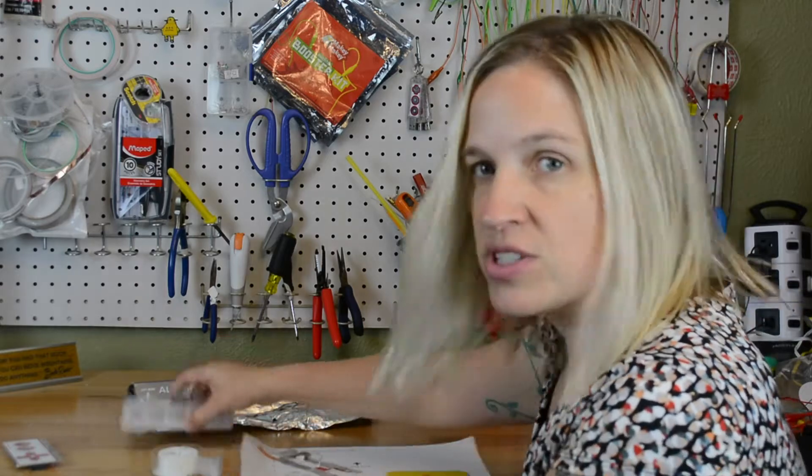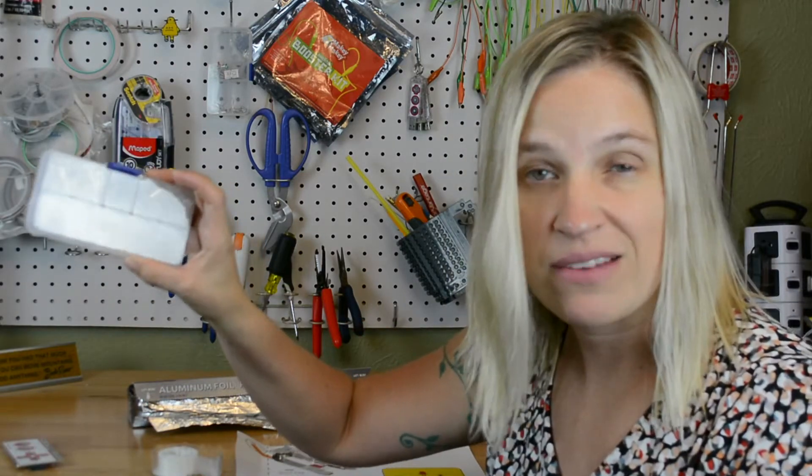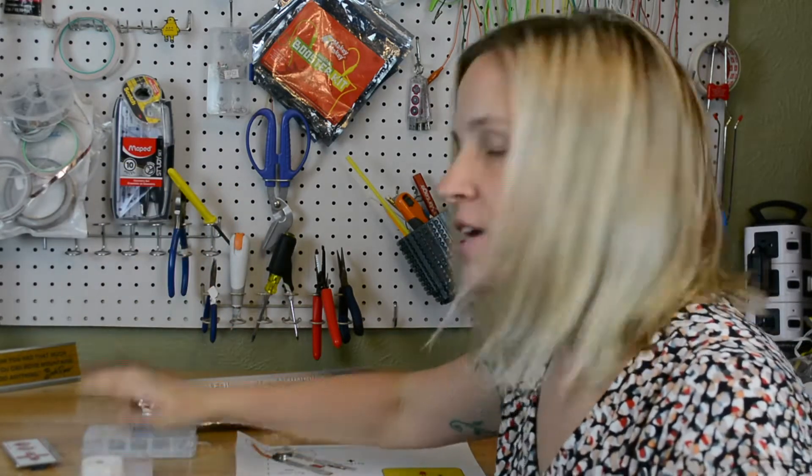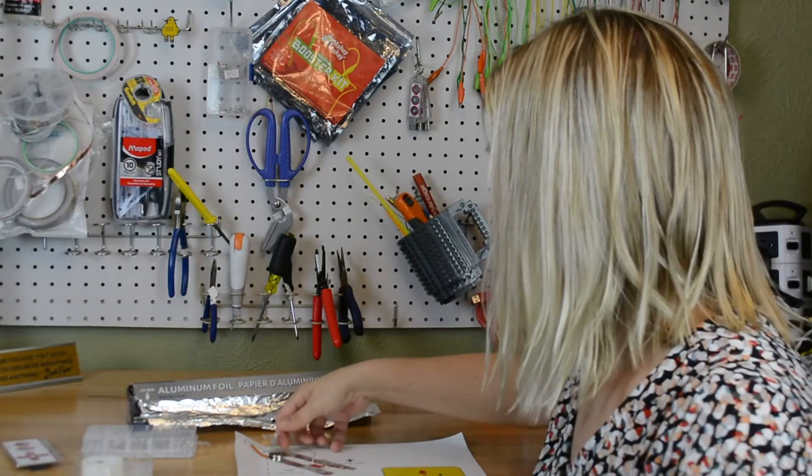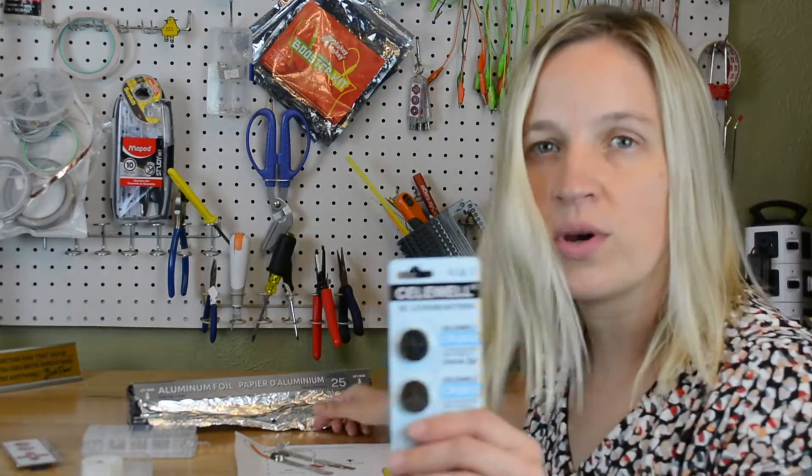To complete a circuit, you're just going to need some things. You're going to have to have some LEDs, some regular tape, some foil, and these 3 volt coin cell batteries.